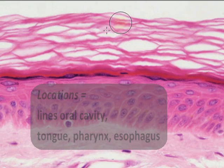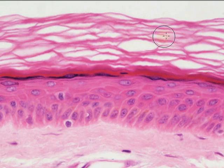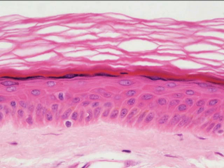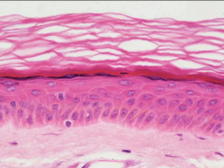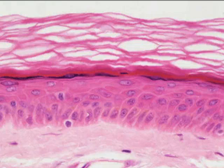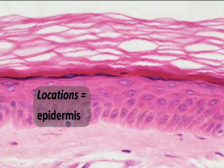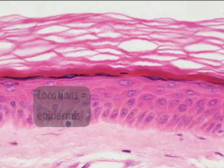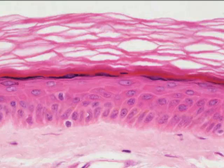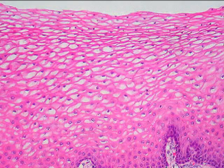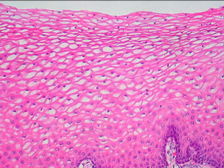All the physical friction of food moving through would damage and irritate very thin epithelial linings, but not so with the stratified tissue. We also find stratified squamous epithelium on the epidermis of the skin, the outermost covering of the skin, providing tremendous physical protection.